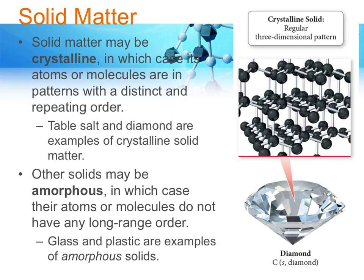There are two types of solid. There's the crystalline solid, where the particles arrange themselves in a repeating, very well-defined order. That makes for a very hard, oftentimes very pretty sample. Amorphous solids are ones in which the particles are not arranged in any particular pattern — things like glass and plastic — and they tend not to be as hard.